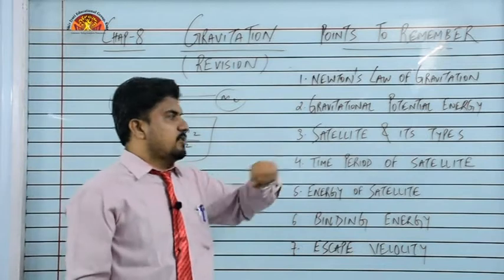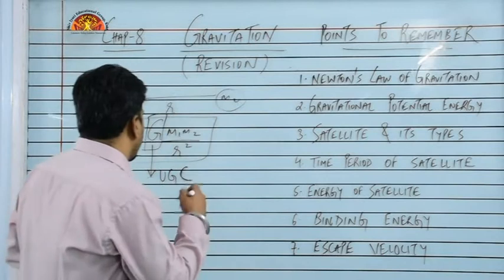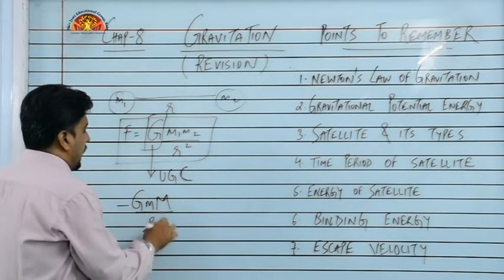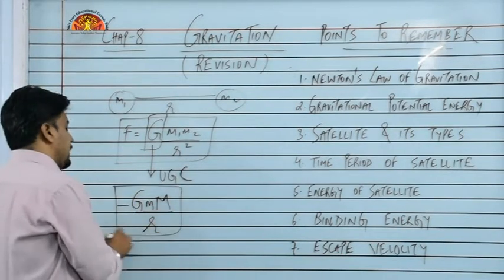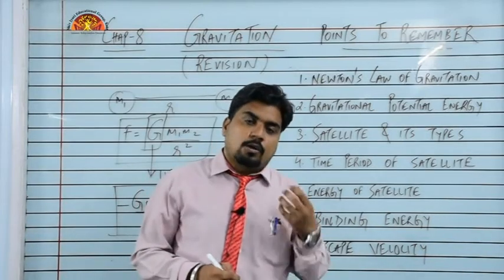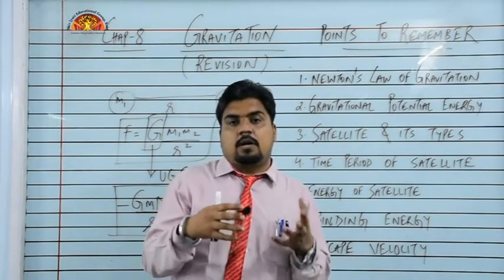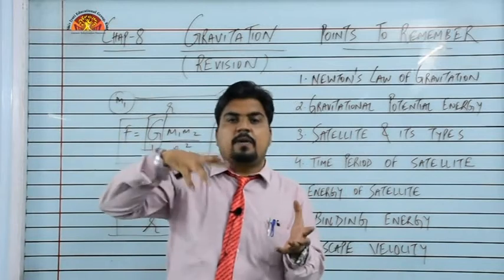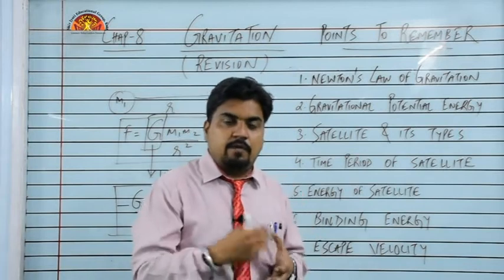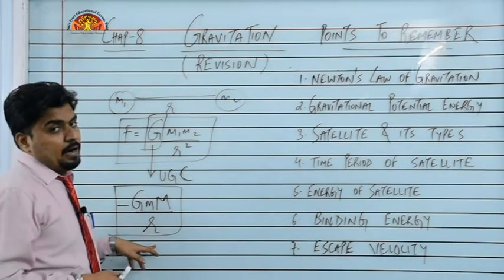Just remember how you have to apply these. To calculate the gravitational force between two masses, you need to use this Newton's law of gravitation. Next thing is gravitational potential energy. What is gravitational potential energy? It is negative of capital G into small m into capital M upon R. We discussed that if a mass is brought from infinity to a particular point, the amount of work done in this process, bringing a mass from infinity to any particular point, that would be termed as gravitational potential energy at that particular point of that body.